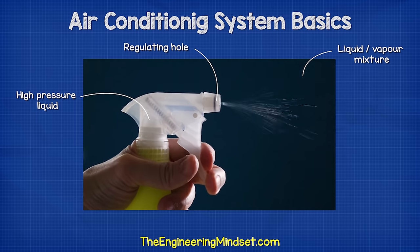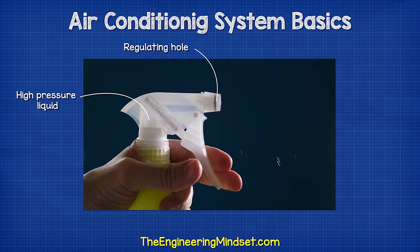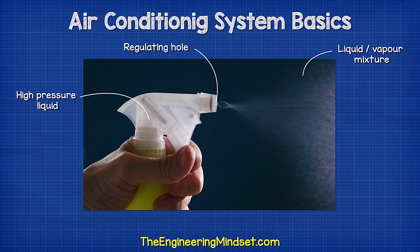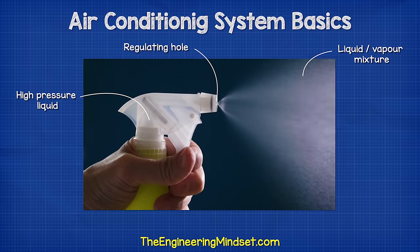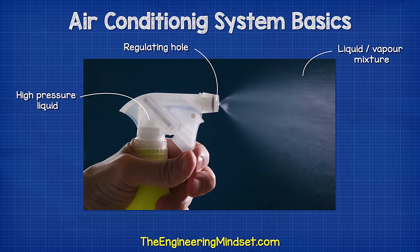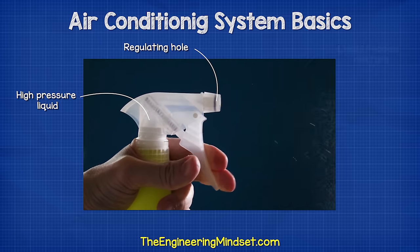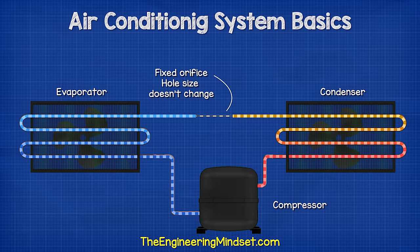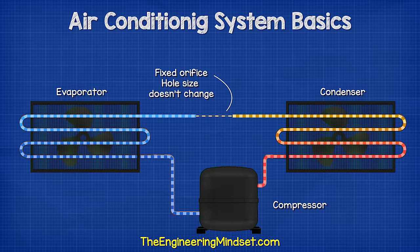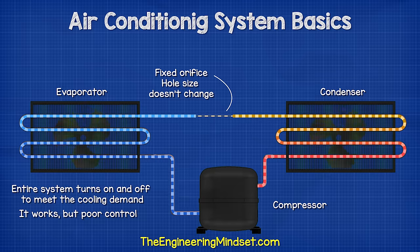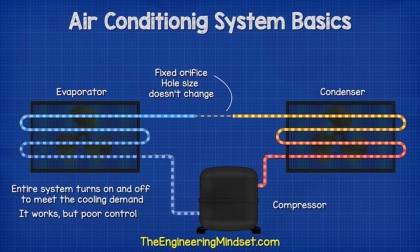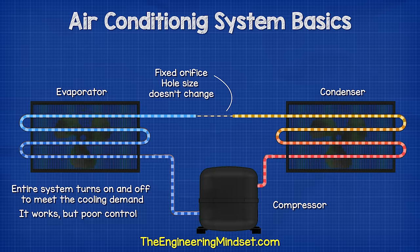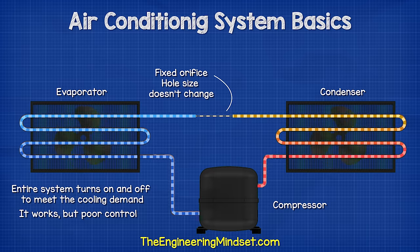It's a little bit like spraying a deodorant can or a spray paint can — it flows through a small hole, causing it to expand as a part vapour and part liquid mixture, and then we can feel the can become cooler. The original method to control this was by using a fixed orifice device, and you might still find these on the back of your refrigerators. The hole within this device was a fixed size, so the entire system would simply turn on and off to meet the cooling demand. It does work, but we can't maintain a stable temperature control because the system is simply turning on and off.